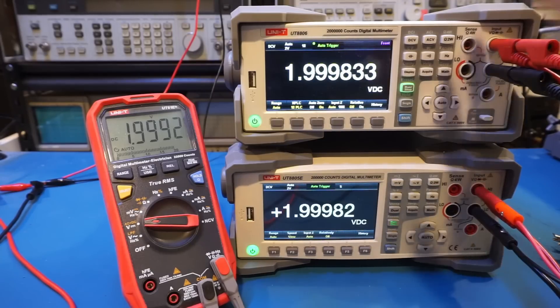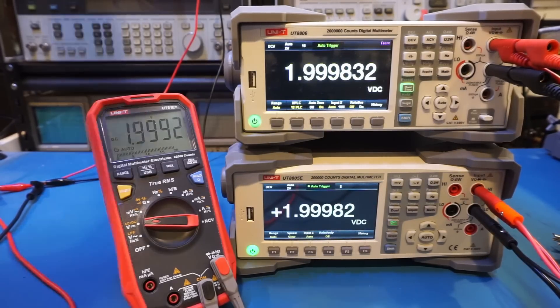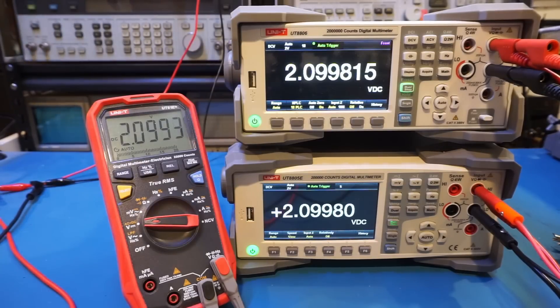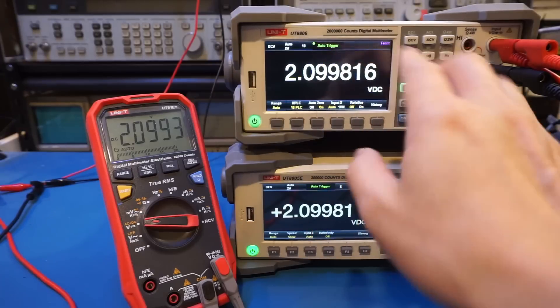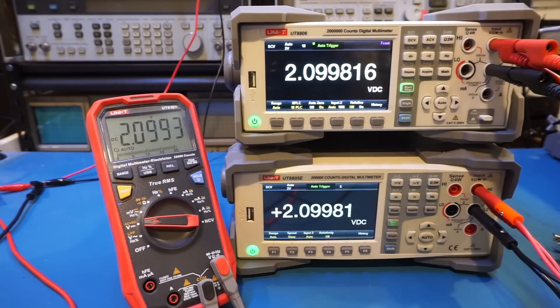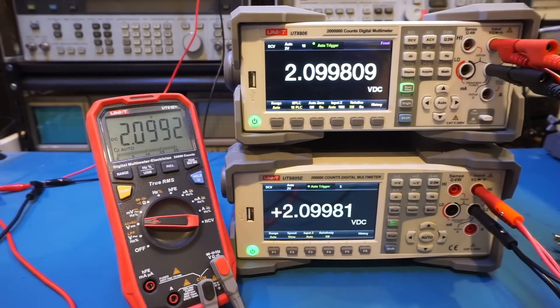For instance, even though the UT8806E is a 2,000,000-counts meter, it still has some building buffer when displaying numbers. For instance, let me adjust the voltage upward a little bit. So let me do, let's say, 2.1V. So you can see here, in theory, being a 2,000,000-counts meter or a 6.5-digit meter, this would cause it to switch to the 20V range and therefore lose the digit of resolution. But as you can see here, we're still able to display the full 6 digits. So the counts here are slightly higher than 2,000,000-counts in this case. And similarly for the 8805E, the counts are also higher than the 200,000-counts that is specified.